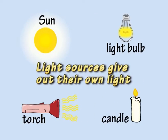A light source is something that gives out its own light, such as a torch or the sun.